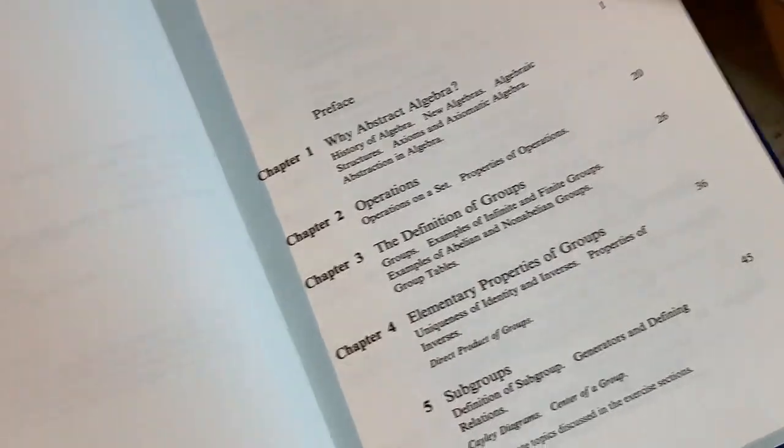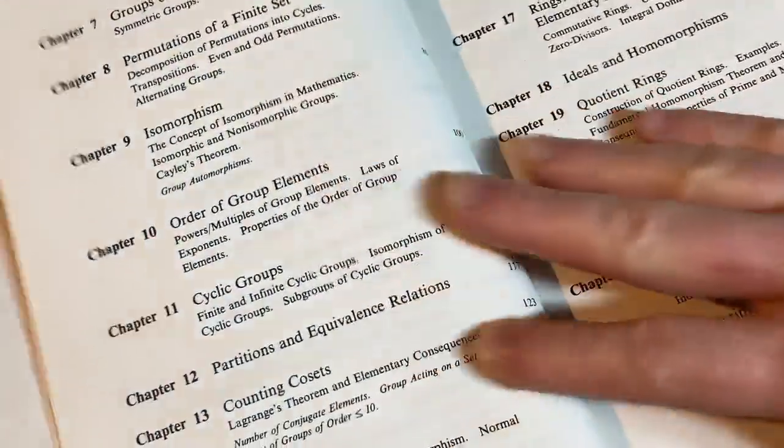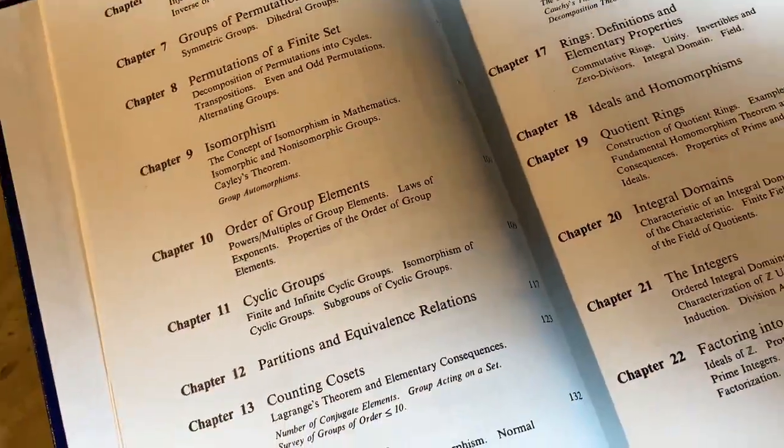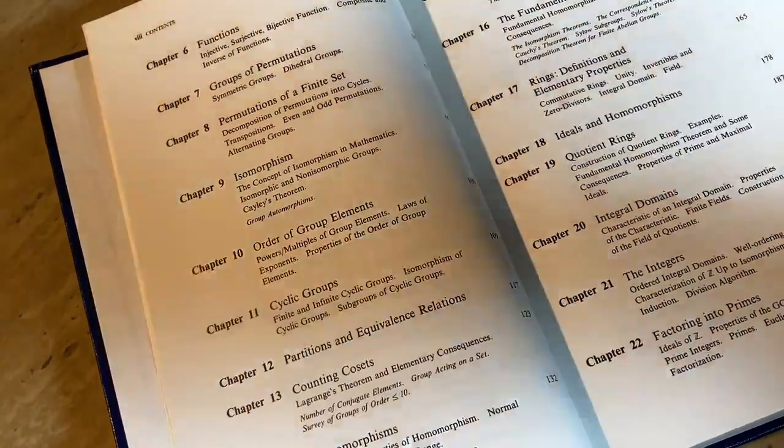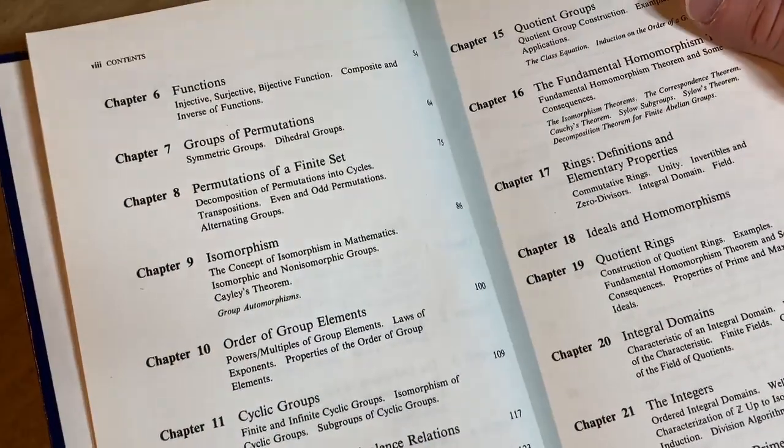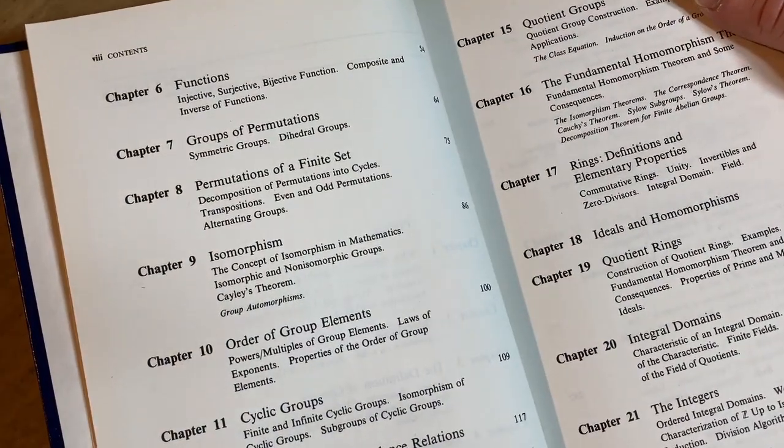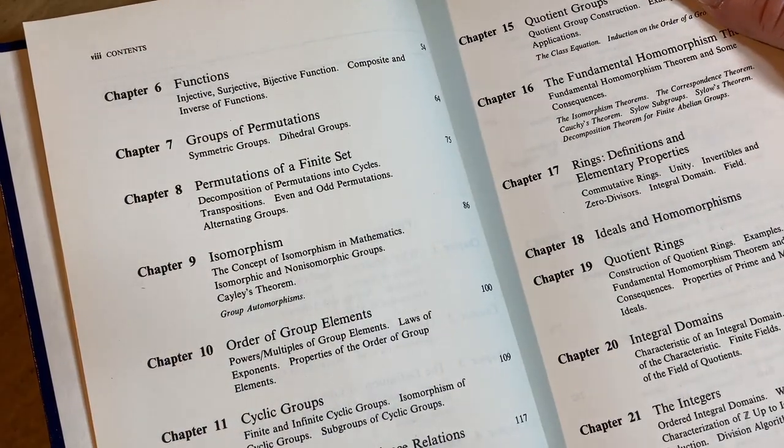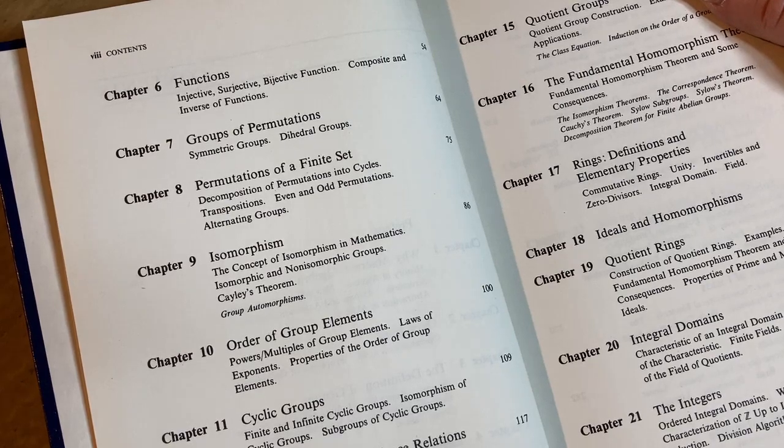Now I want to do some group theory. Just looking at the book makes me want to sit down and churn out some proofs. Just a little bit of math, maybe a couple of warmup proofs and then jump into something a little bit harder. Functions, injective, surjective, bijective function, composite and inverse of functions.